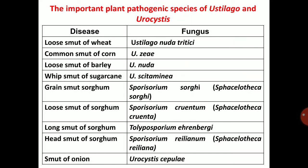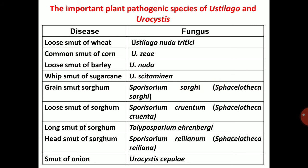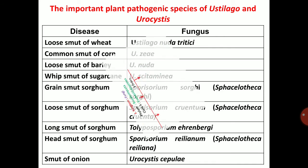The important plant pathogenic species of Ustilago and Urocystis: loose smut of wheat caused by Ustilago nuda tritici; common smut of corn, Ustilago zeae; loose smut of barley, Ustilago nuda; whip smut of sugarcane, Ustilago scitaminea. There are four types of smut in sorghum: grain smut caused by Sporisorium sorghi (synonym Sphacelotheca sorghi); loose smut of sorghum, Sporisorium cruentum; long smut of sorghum, Tolyposporium ehrenbergii; head smut of sorghum, Sporisorium reilianum. Last one is smut of onion, Urocystis cepulae.